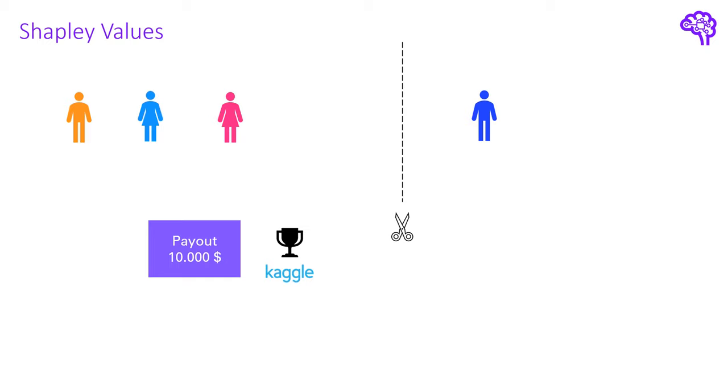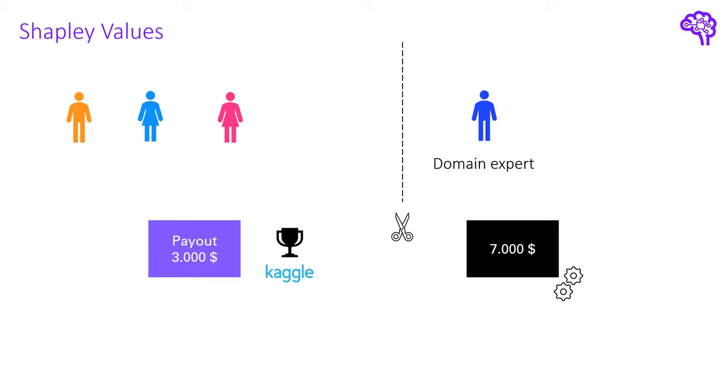Let's say for instance we remove this blue guy. He has a strong domain knowledge about the problem addressed in the Kaggle competition and without him the team would only place second instead of first. The second place would be three thousand dollars instead of ten thousand, so the contribution to the payout for this player would be seven thousand dollars.